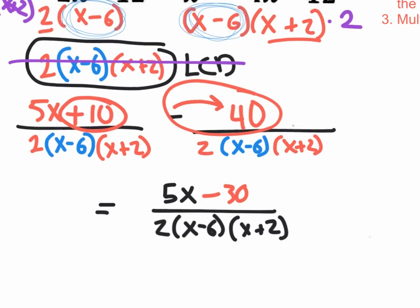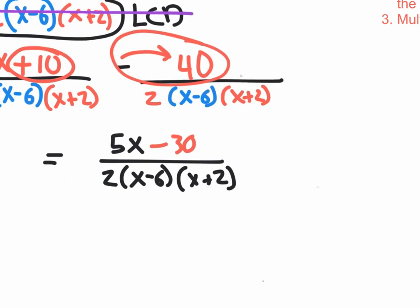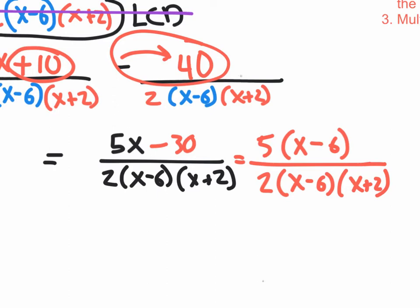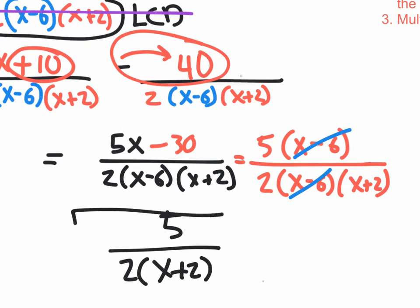That's the answer, but we should always try to continue factoring. On the top, we have five X minus 30 — we can factor out a five, leaving X minus six inside. On the bottom, we still have the LCD. Looking at the new answer, we have X minus six on top and X minus six in the denominator as well, so those cancel. Our final answer is five on top and two times X plus two on the bottom.